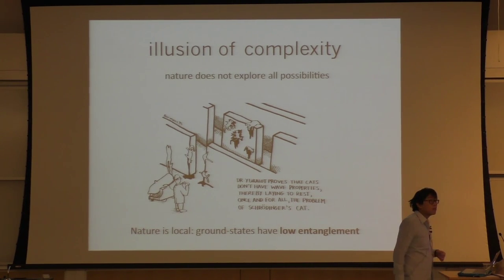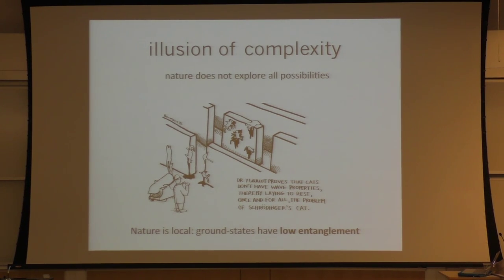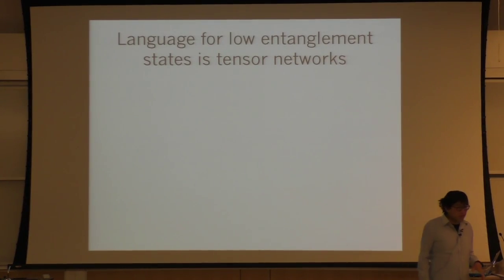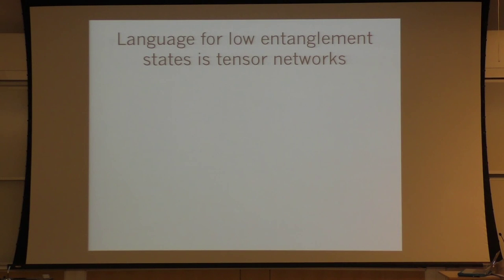You can prove rigorously that in one-dimensional gapped systems, for Hamiltonians without truly long-range interactions, the system must have lower entanglement. For gapless systems there are corrections, but they're not large. In 2D and 3D, you can argue as a physicist that this is also true for most cases. So the whole point of tensor networks is to provide a language to work directly with only the physical states that have low entanglement.